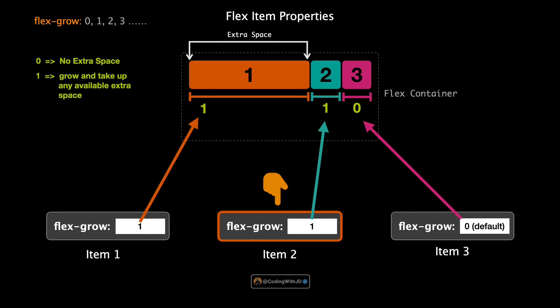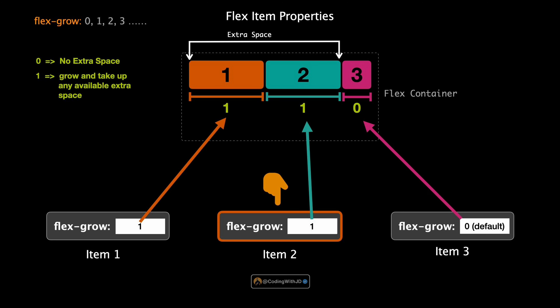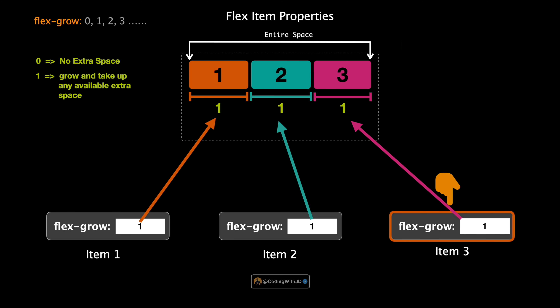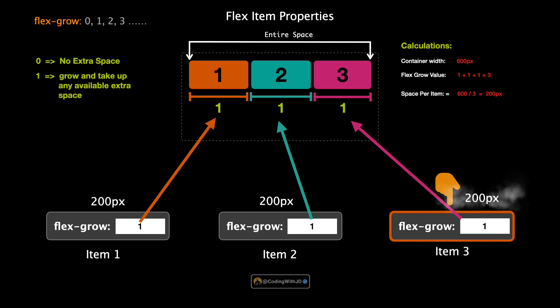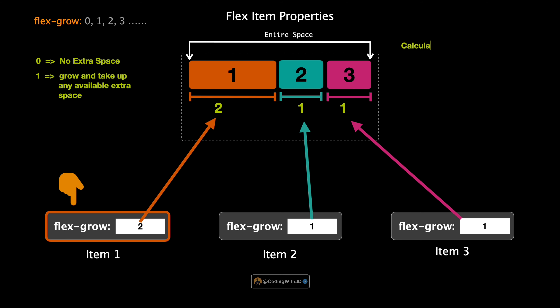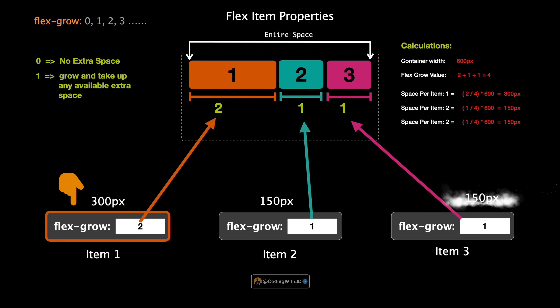Now let's set the flex-grow of the second item to one as well — with both the first and second item at flex-grow 1, they share the available space equally. Next, giving the third item a flex-grow of one means all three items equally share the entire space of the container. Finally, if we change the first item's flex-grow from one to two, it now takes twice as much of the remaining space compared to the second and third items, making it larger. That's how flex-grow works.